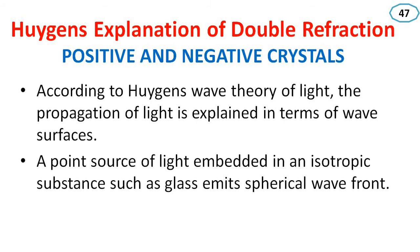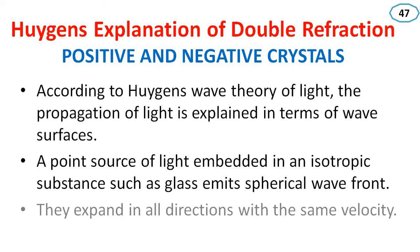A point source of light embedded in an isotropic substance such as glass emits a spherical wavefront. The wavefront expands in all directions with the same velocity. For example, in a glass block, the point source in the center means light will travel in all directions with the same velocity.